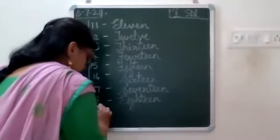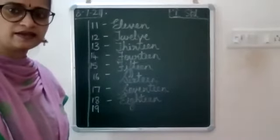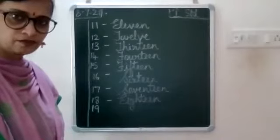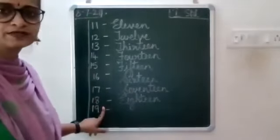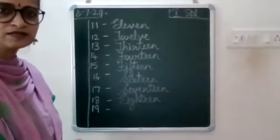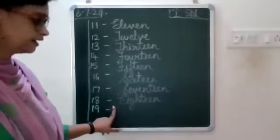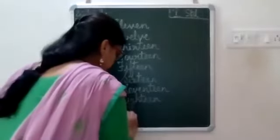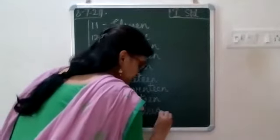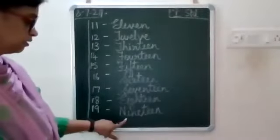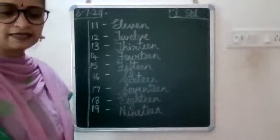Now next, leave a line, write 19. Then leave a finger space, put a small dash, leave a finger space, then again leave a finger space, write capital N-I-N-E-T-E-E-N, 19.